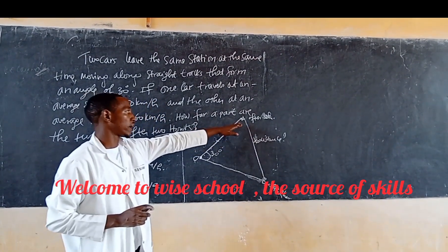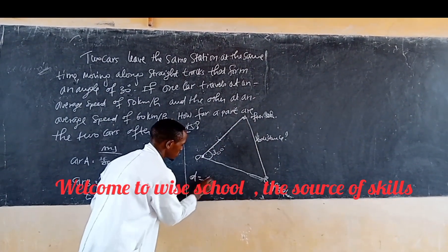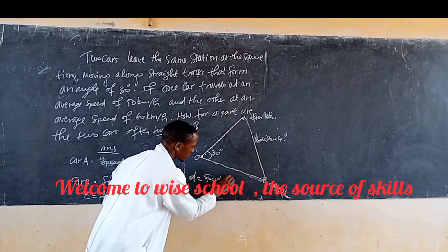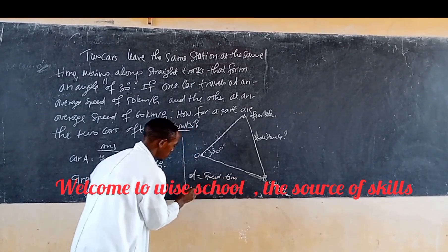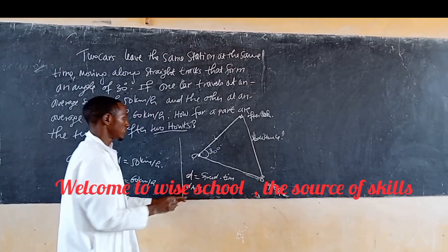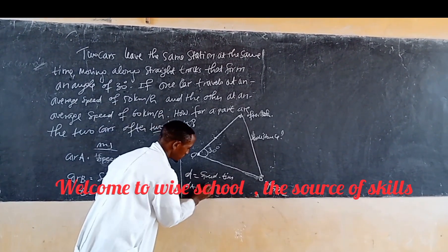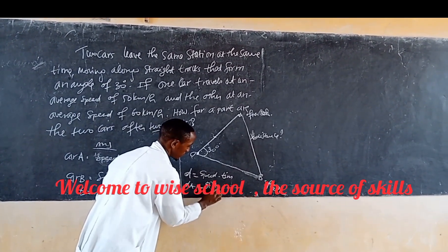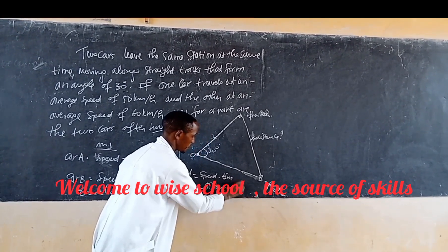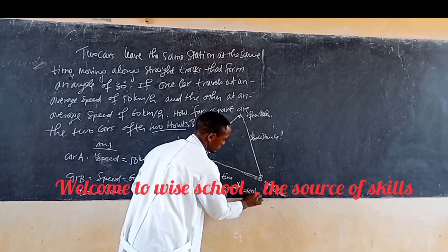The distance traveled by car A — the distance equals speed times time. So the distance from A is the speed of A in kilometers per hour times the number of hours, which gives the distance from A equal to 100 kilometers.